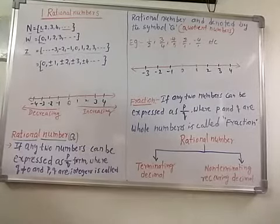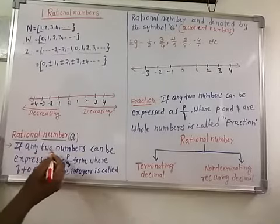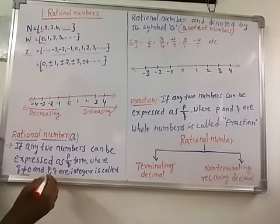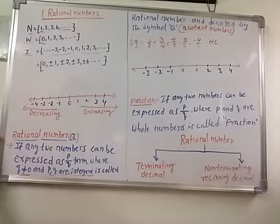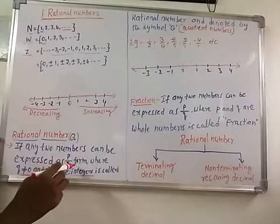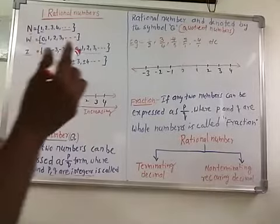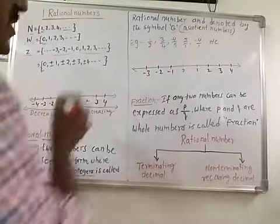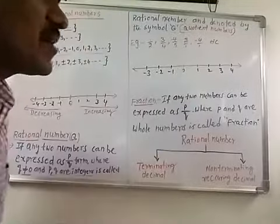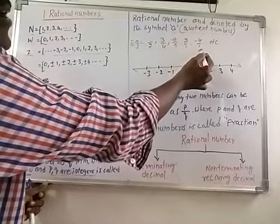Now, what is a rational number? If any number can be expressed in the form p/q, where q is not equal to 0 and p and q are integers, it is called a rational number. Rational numbers are denoted by the symbol Q, and are also called quotient numbers. For example: 1/2, 3/4, −4/5, 2/1, −4/1, etc.